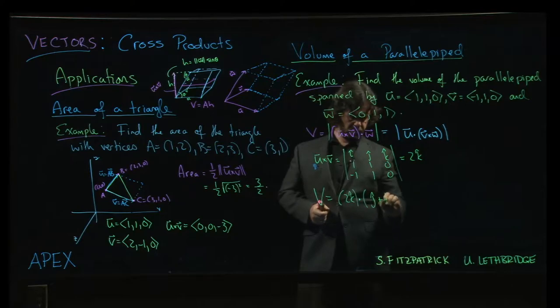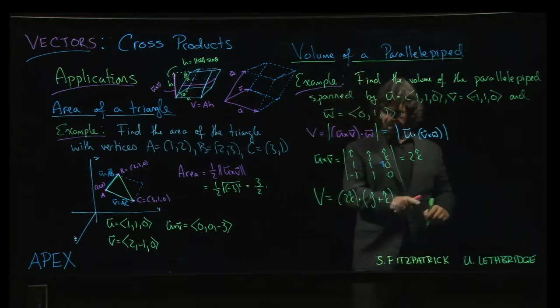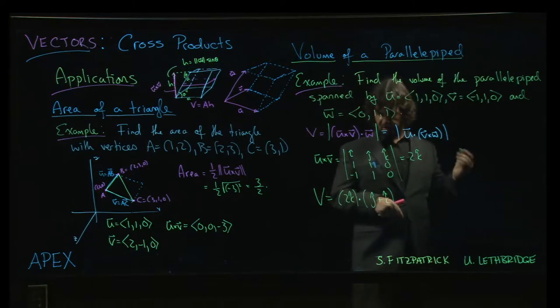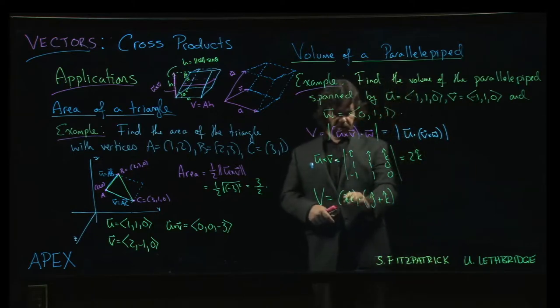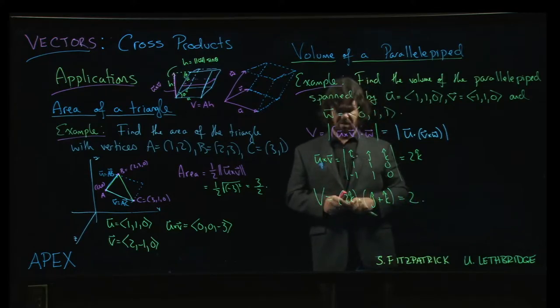So J plus K, if you want to write it that way. When you're taking dot products, dot products of different unit vectors are 0. So we're just going to get 2K dotted with K. We get a volume of 2. That's not so bad.